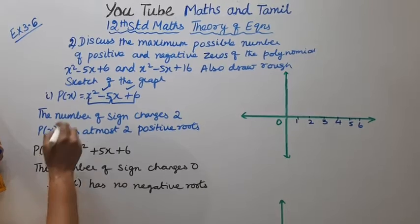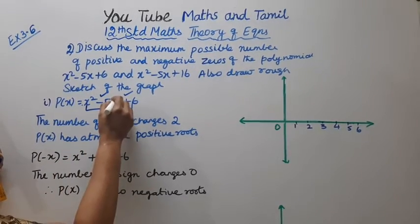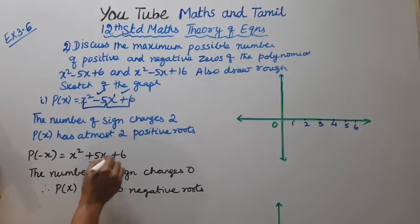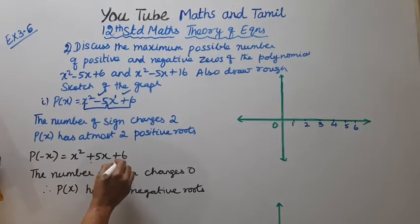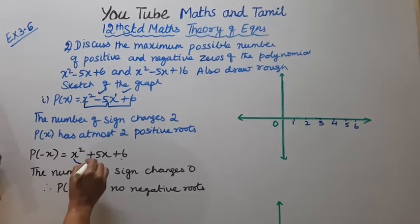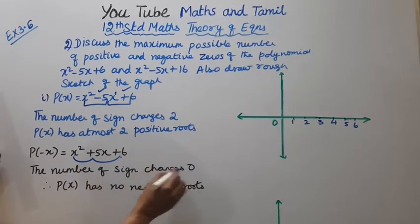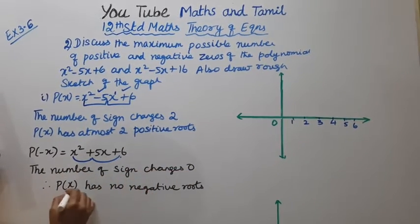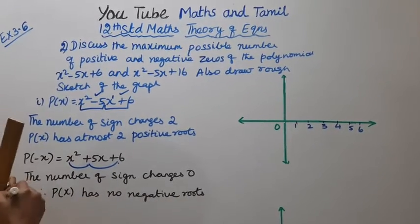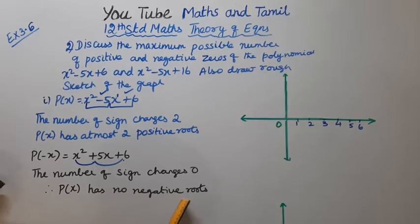For P(-x), the number of sign changes is 0. Therefore, P(x) has no negative roots.